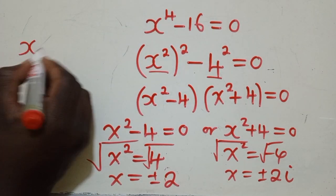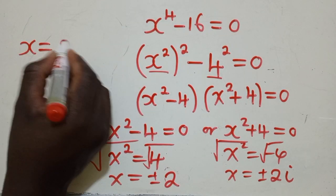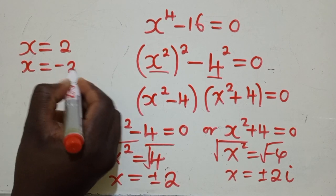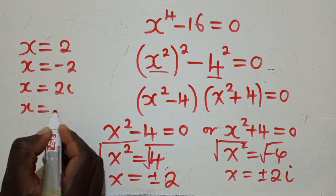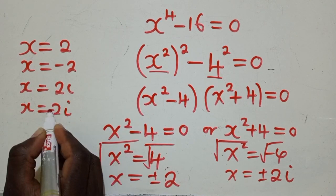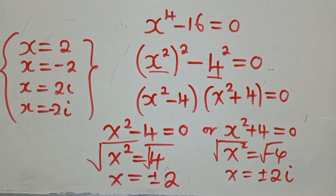So, the solutions will be, X is equal to 2, X will be equal to negative 2, X will be equal to 2I, X will be equal to negative 2I. So, these are the four solutions.